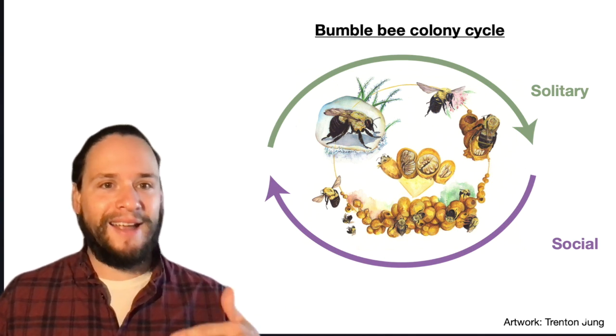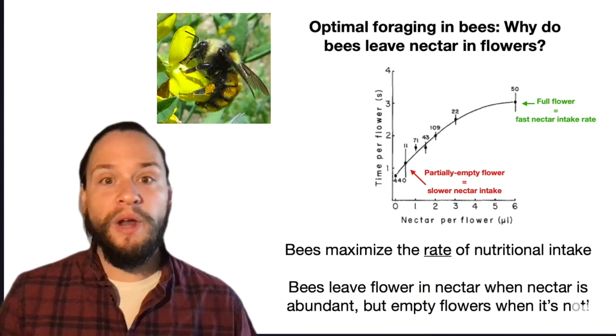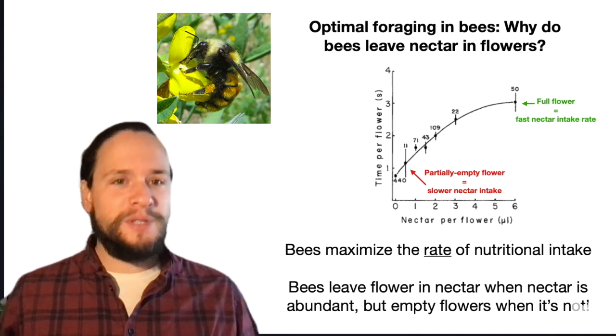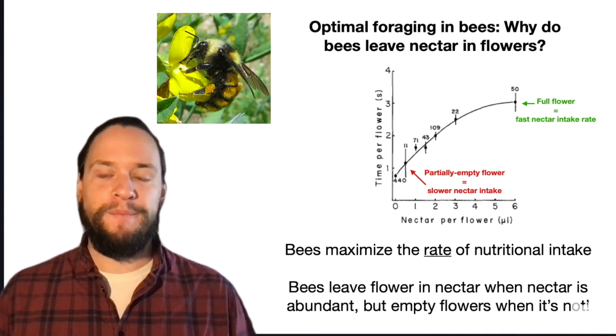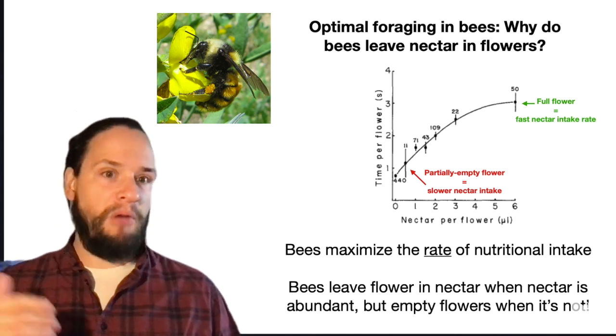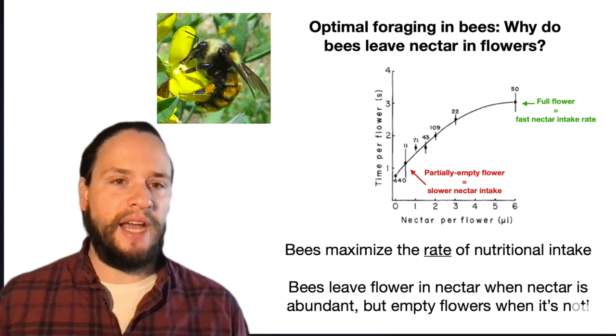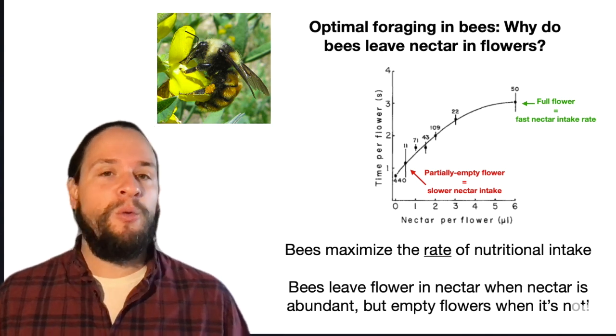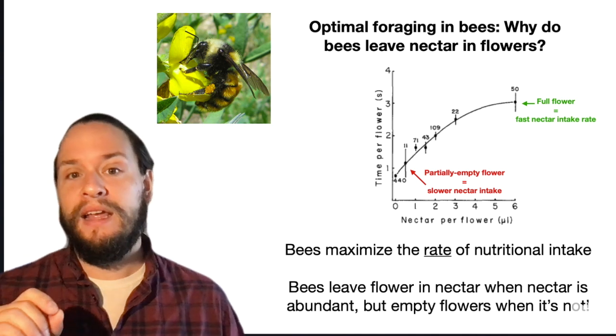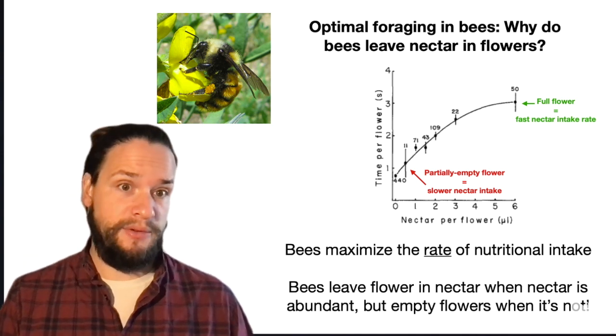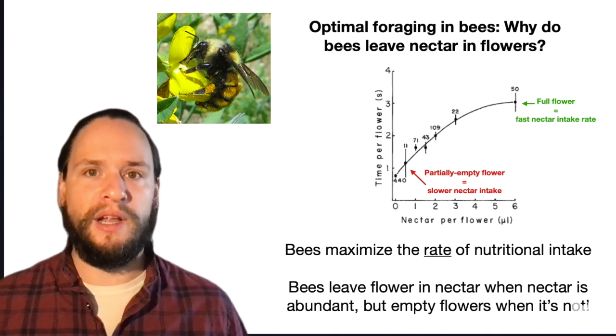And so bees are constantly trying to find food as sort of fast as possible. So one example of this is this interesting observation that sometimes when you see bumblebees forage on flowers, they won't drink all the nectar in it, right? So you kind of think, oh, if you're desperate for food, you're spending all this energy and time trying to find good resources. Why would you leave nectar once you've found a flowering plant, right? Well, so there's an interesting explanation for that. And it has to do with the fact that bees are not maximizing necessarily the total amount of food they want to bring in, but they're really maximizing the rate per time at which they want to collect food.